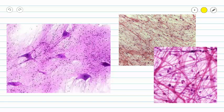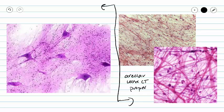Now some of these pictures might look a little bit familiar. What we have on this side of the page is areolar loose connective tissue proper. And then on the left side of our page, we see nervous tissue. Students have pointed out to me in the past that these tissues look rather alike,